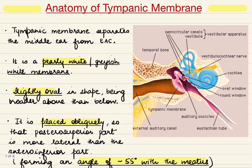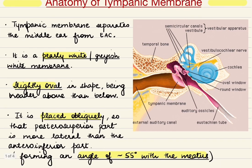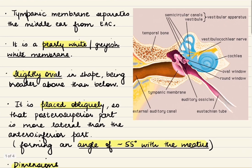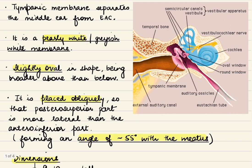The tympanic membrane is a membranous structure which separates the external ear from the middle ear. It is a pearly white or grayish white membrane which is slightly oval in shape, being broader above. It is placed obliquely in the canal, meaning the posterior superior part is placed more laterally and the anterior inferior part is placed more medially. This tympanic membrane forms an angle of around 55 degrees with the floor of the external auditory canal.